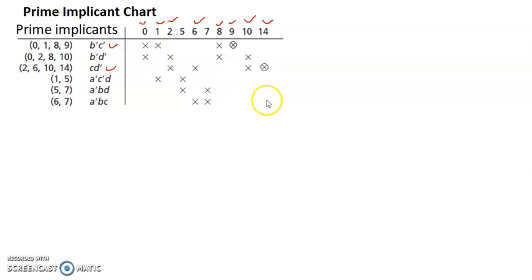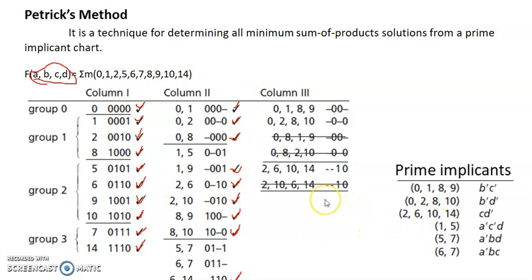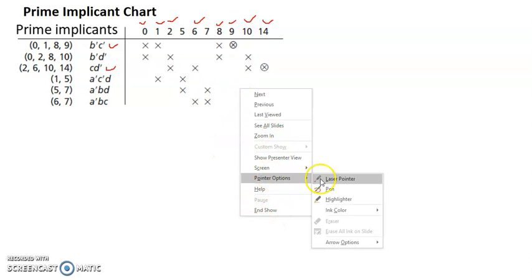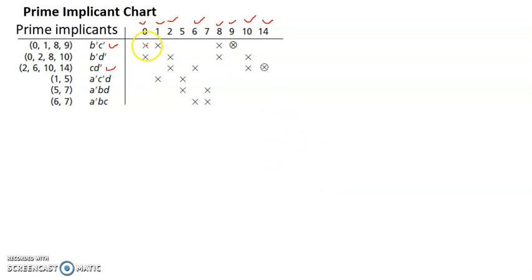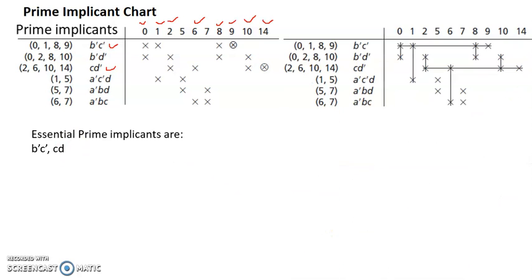In the Petrick method, up to a certain point there is no change. The first part is the same: you simplify, do all the comparisons, find out all the prime implicants, then move on to the prime implicant chart, scan through the columns, and find the essential prime implicants. All these steps remain the same. The additional step comes once you find all the essential prime implicants and determine what they cover.